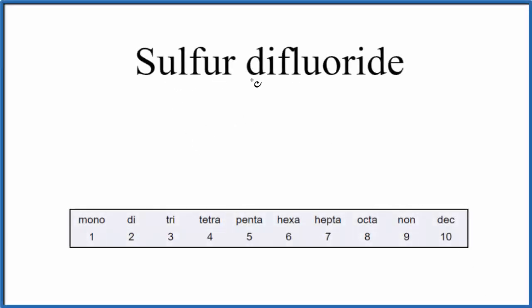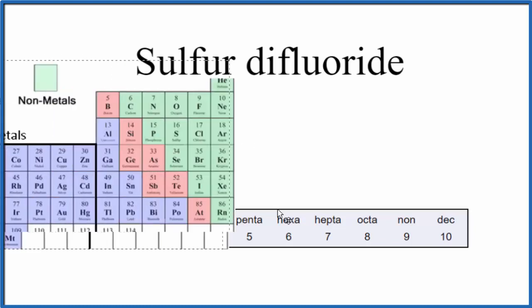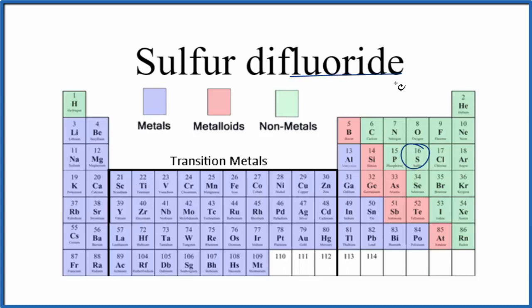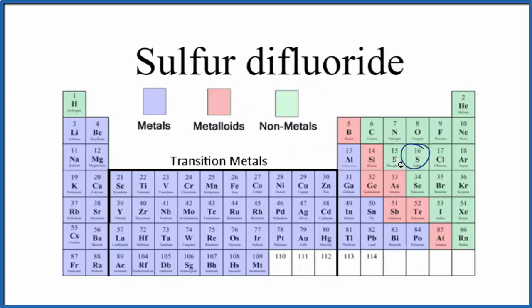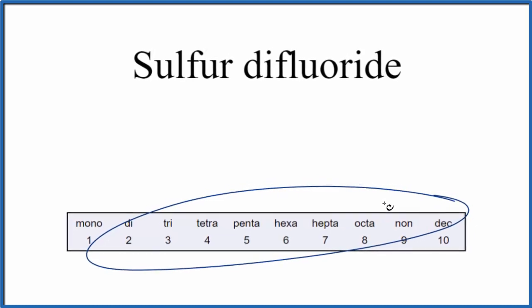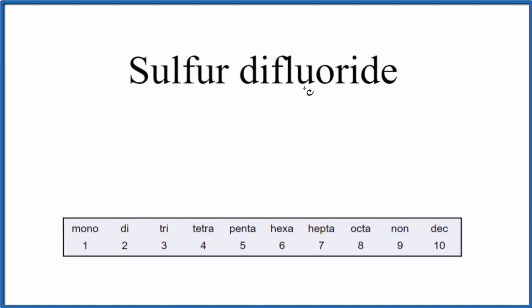To write the formula for sulfur difluoride, we first need to figure out what type of compound we have. On the periodic table, if we look up sulfur, that's S right here — sulfur is a non-metal, and fluoride right here is also a non-metal. So when we have two non-metals, we have a molecular or covalent compound, and we don't need to think about ionic charge. We do need to consider, though, these prefixes when we write the formula for sulfur difluoride.